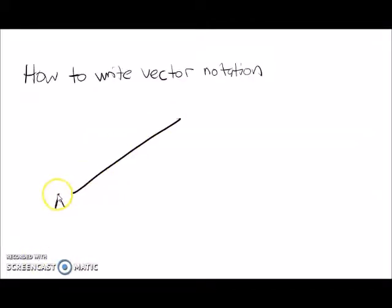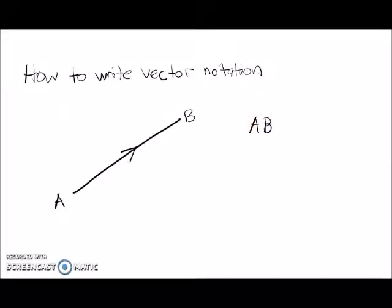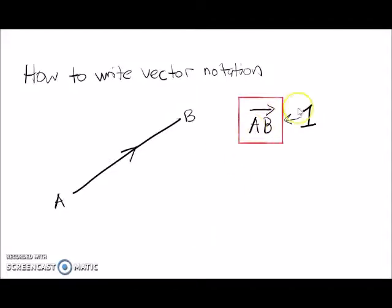Let's say we have a straight line and it represents A and B, and it is given with the direction A to B. So here we can write the vector notation as AB — A is actually going to B. So this is the first way to make a vector notation.